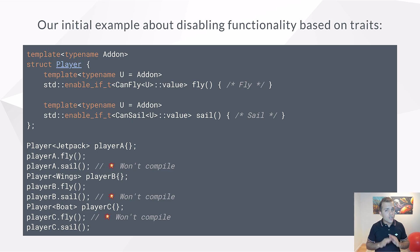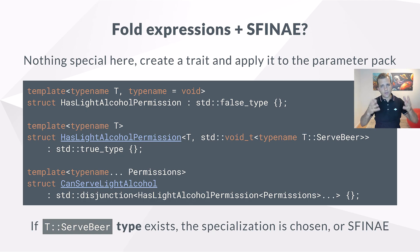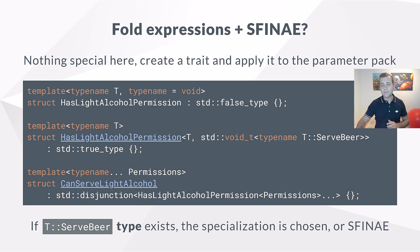Remember, in this slide we did not introduce any new feature — it's more of a cool use case of SFINAE, and it doesn't look too bad either. The last thing I want to quickly show you is how to use SFINAE with fold expressions. First, we create a trait that checks if a type has a serve_beer member type definition — we assume that the type gives the permission to serve light alcohol. Then we check multiple types for the permission to serve light alcohol using a fold expression. Remember disjunction — it is the logical OR of template metaprogramming. So if any of the permissions allows us to serve light alcohol, then the result is true.